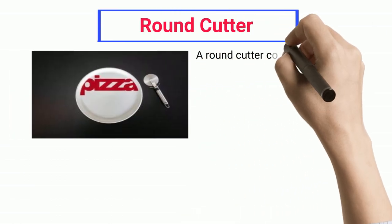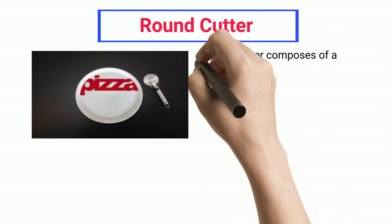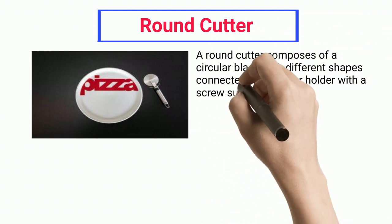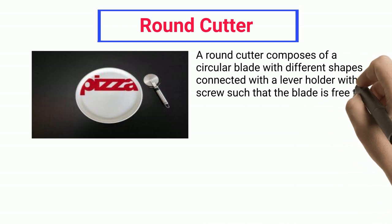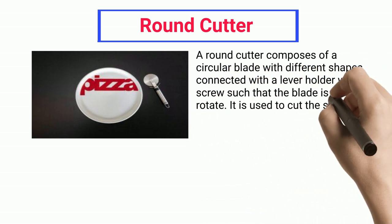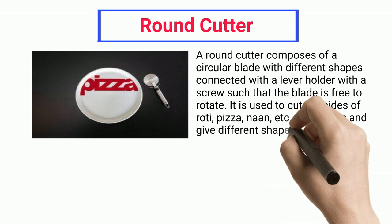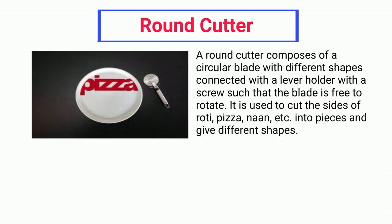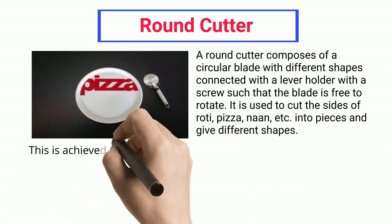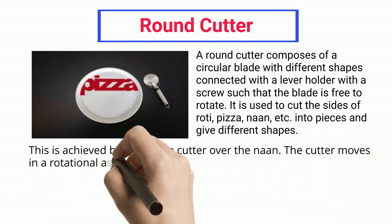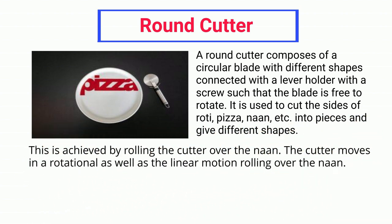Round cutter. A round cutter comprises a circular blade with different shapes connected with a lever holder and a screw such that the blade is free to rotate. It is used to cut the sides of roti, pizza, naan, etc., into pieces and give different shapes. This is achieved by rolling the cutter over the naan; the cutter moves in both rotational and linear motion while rolling over the naan.